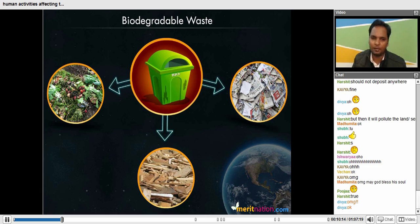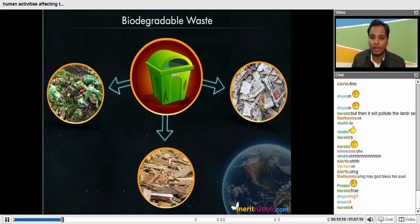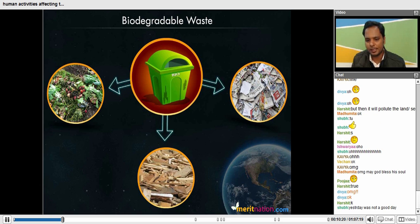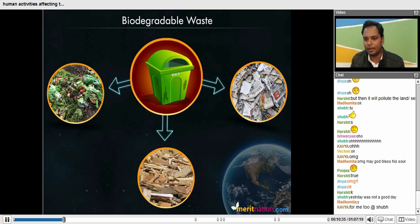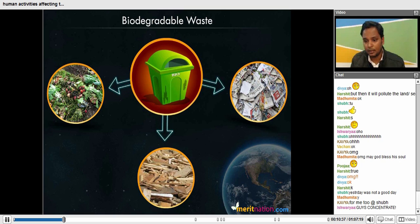So we all know that vegetables, fruit, wood, and those which are normally produced by nature - they can easily be biodegradable because nature has the mechanism to degrade whatever it produces.